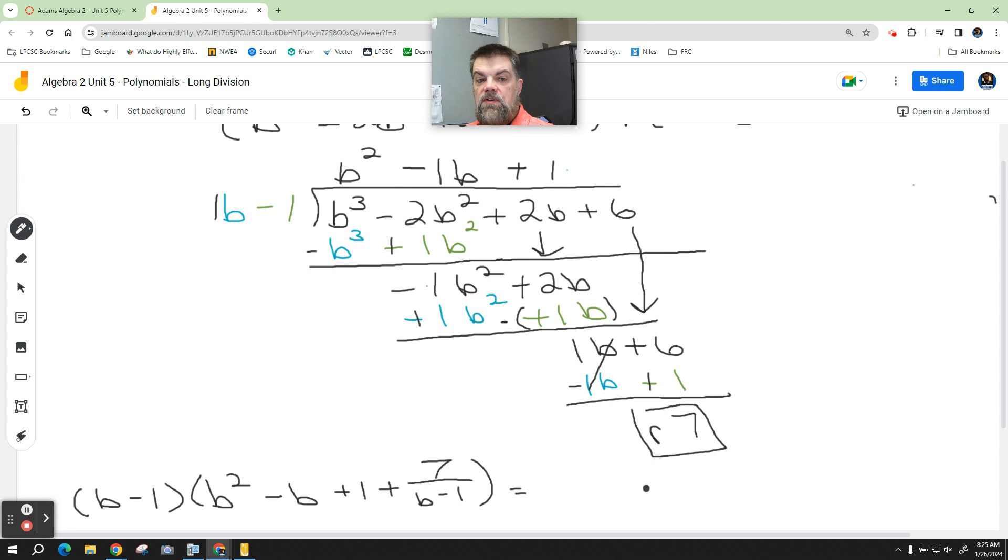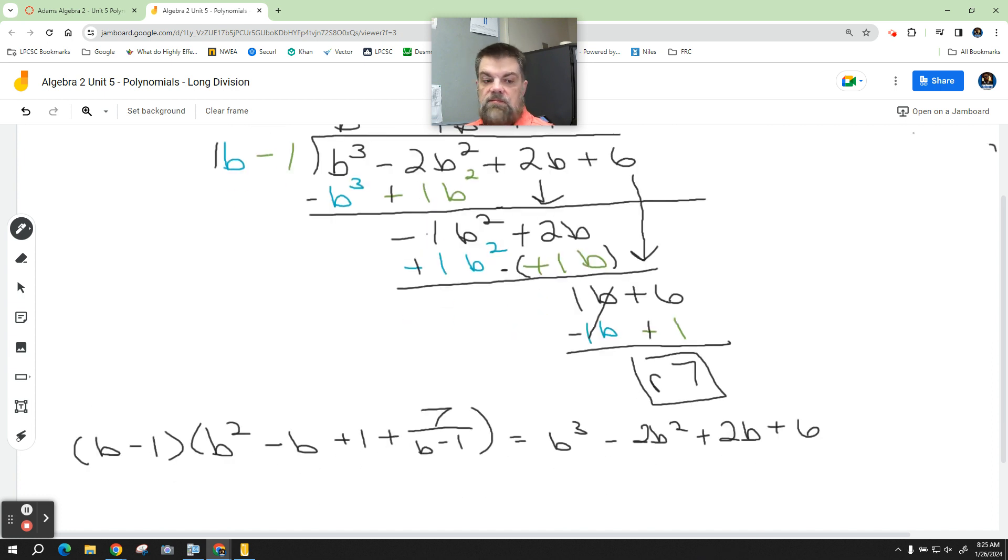Well, what does all that stuff equal? Well, it equals b cubed minus 2b squared plus 2b plus 6. So technically, technically, this is our answer. But I want you to know that we're saying this times this equals this.